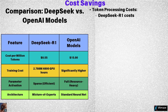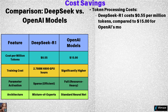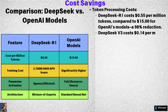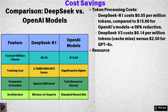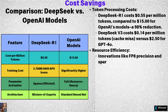The results? Unparalleled cost savings. DeepSeek R1 processes tokens at just $0.55 per million tokens, compared to $15 for OpenAI's models, a staggering 98% reduction. Even more impressively, DeepSeek V3 handles input costs at $0.14 per million tokens, significantly undercutting GPT-4o's $2.50 per million tokens. Its open-source nature allows developers to further optimize the model, unlocking even greater savings and customizations.